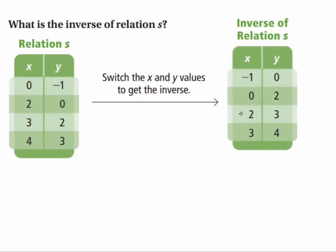When you switch the x and y values, then the negative one becomes your input and the zero becomes your output. Here, the two maps to the output two for the inverse and the zero maps to the input. So you simply literally switch your x's and y's.